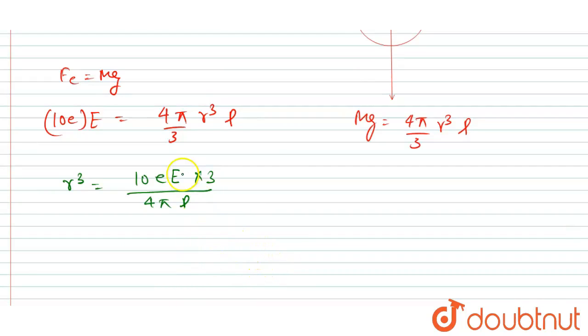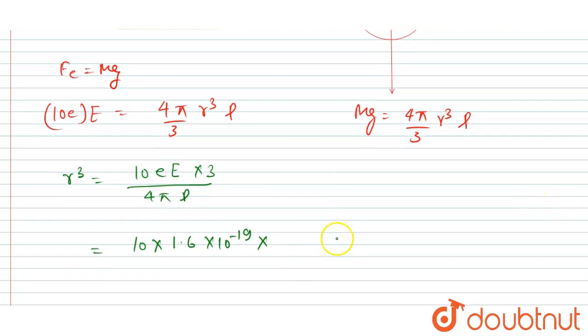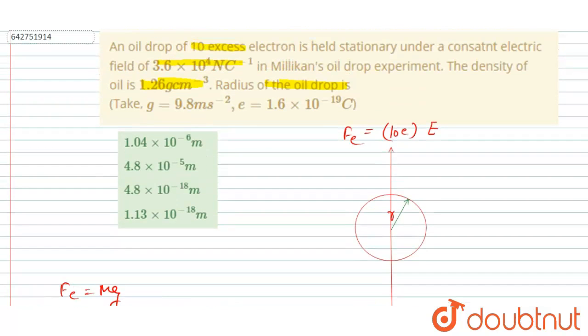So I will write 10 into, this charge on one electron is 1.6 × 10⁻¹⁹, and electric field is already given in the question. If you see here it is 3.6 × 10⁴ into 3, in division 4π into ρ.